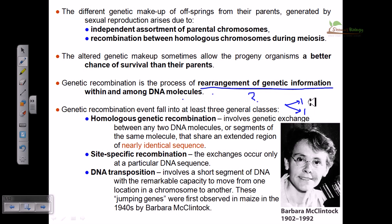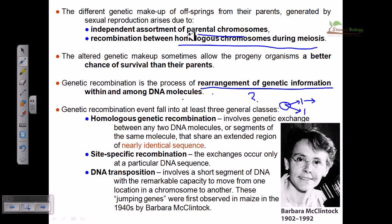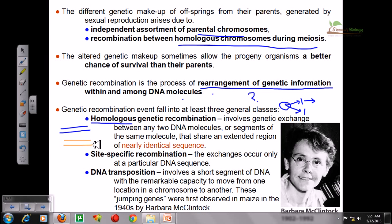Why do we need the rearrangement of genetic information? The answer is that we need variation. Variation is a very important thing in the lifespan of an organism because it can lead to two different effects: superiority or inferiority. Sometimes variation can help you stay in the environment for a long time — it could be favorable for you — or it could be dangerous and kill you.